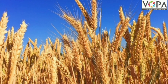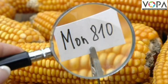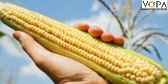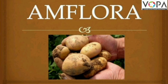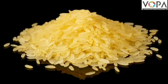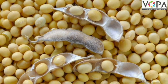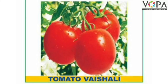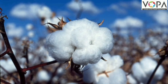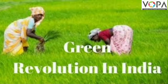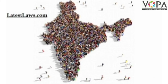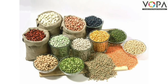Pest-resistant genes have been introduced in some of these GM crops — for example, maize MON 810 and MON 863, potato Amflora, rice Golden Rice, soybean Veg Gold, tomato Vaishali, and cotton Bt cotton. In this way, a green revolution is being achieved through tissue culture, and a country like India with a huge population is meeting with success in producing sufficient food grains for all.